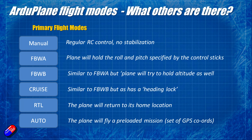Manual is regular RC control with no stabilization and no interference from the flight controller, with the exception of applying the mixer so a flying wing or VTOL works. I fly a lot in manual because a well-set-up plane in manual without much wind is a joy to fly and naturally stable. Fly by Wire A has the plane hold the roll and pitch specified by the control sticks. Fly by Wire B does that but also holds altitude. Cruise is like Fly by Wire B but also has heading lock, maintaining direction even when blown about by the wind.